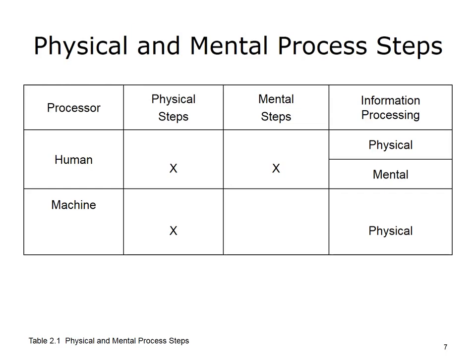A process is composed of tasks accomplished by both humans and machines. From cognitive science, we know that humans can perform both physical and mental steps or tasks. Further, we know that today machines can only perform physical tasks — even computers cannot think like a human. However, we commonly use computers for information processing tasks. While the computer performs the physical manipulations on the information, interpretation and thinking remain the role of the human.